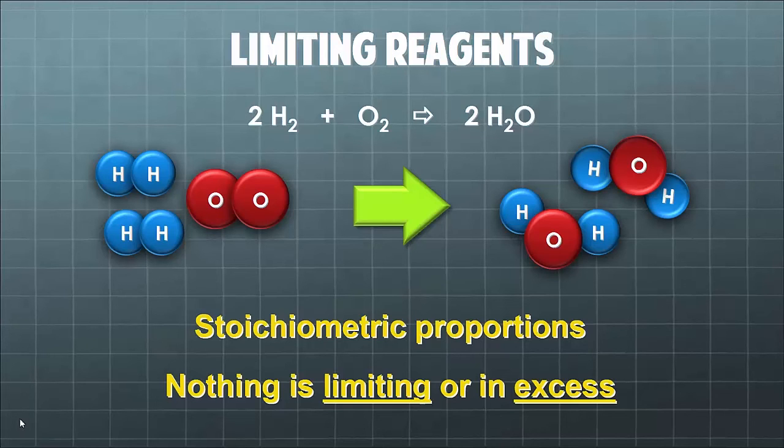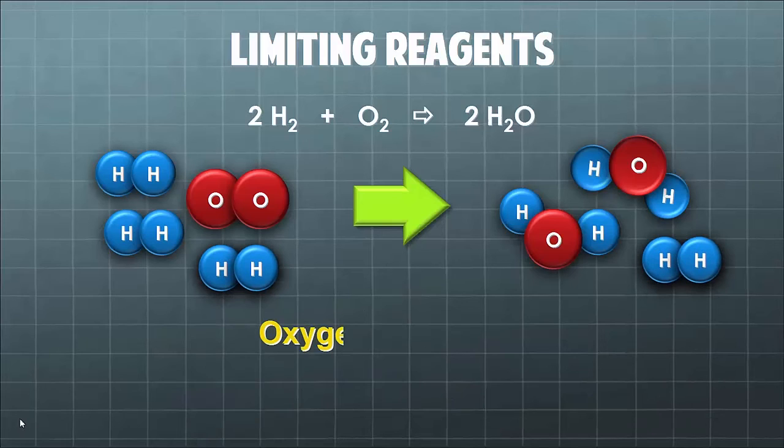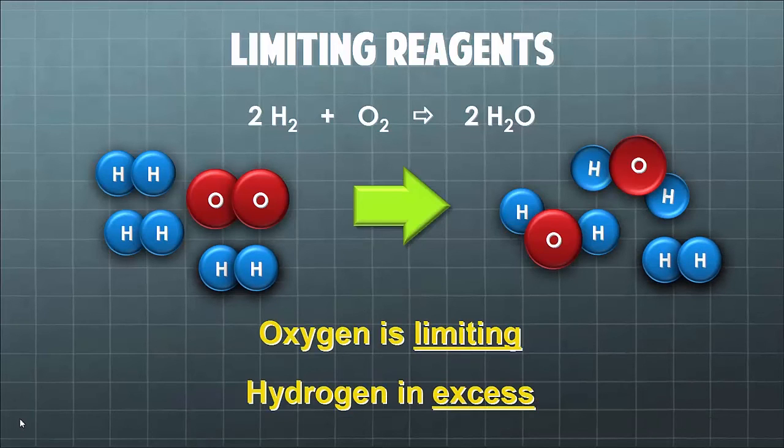Let's have a look at this other example though. Perhaps we have some extra hydrogen. So if we've got a little bit of extra hydrogen, that hydrogen is going to be left over at the end of the reaction. We'd say that the oxygen is limiting and the hydrogen is in excess. If we want to work out the maximum amount of water we can produce, we want to be looking at how many moles of oxygen we've got. The hydrogen isn't going to be affecting it.